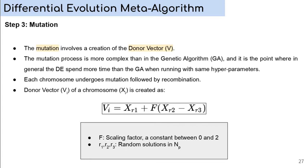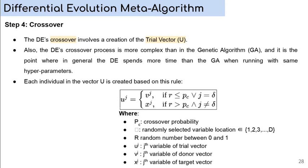In this slide, we have step 4, about the crossover. The differential evolution's crossover involves a creation of the trial vector, named as U. Also, the differential evolution's crossover process is more complex than in the genetic algorithm. And it is the point where, in general, the differential evolution spends more time than the genetic algorithm when running with the same hyperparameters. Each individual in the vector U is created based on this rule. Again, due to time limit, we will not detail the explanation of this equation, but its definition and parameters are presented.